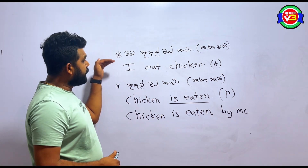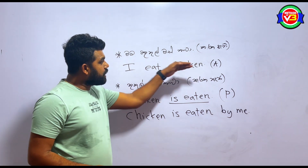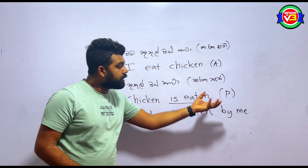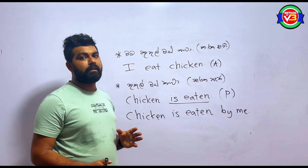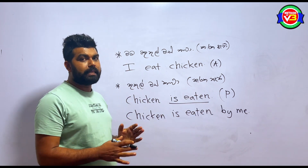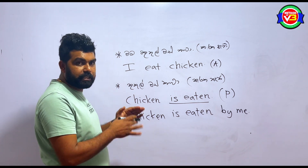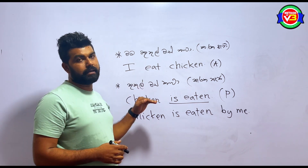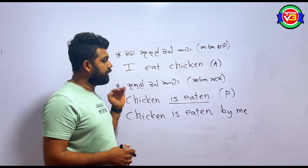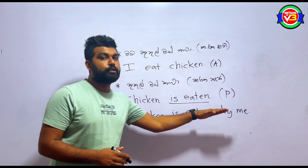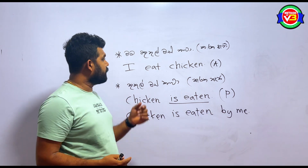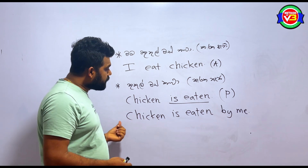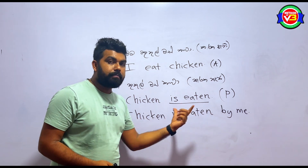Then, 'I eat chicken' — that is active voice. 'Chicken is eaten by me' — that is passive voice. One thing is that I am talking about the way in English. 'I eat chicken' — active voice. 'Chicken is eaten by me' — passive voice.